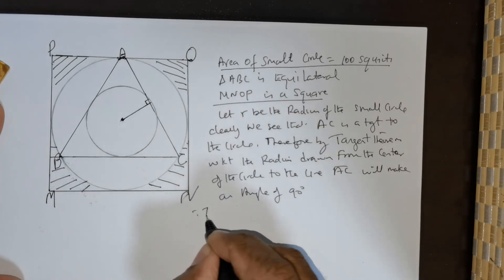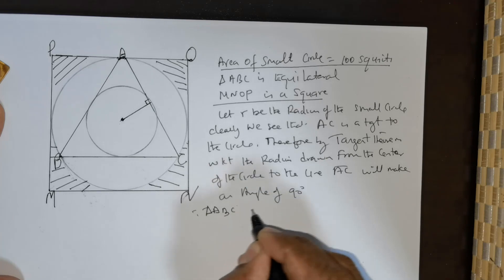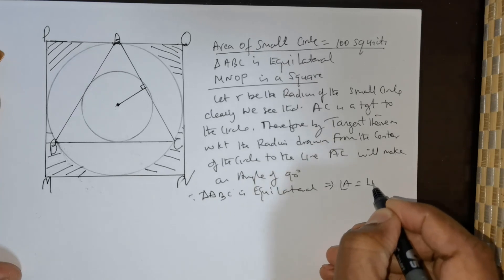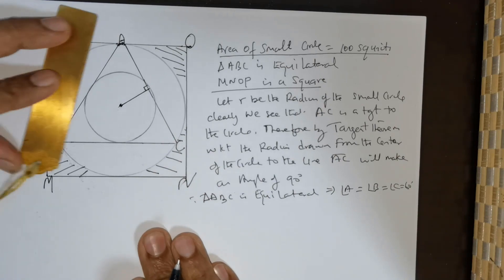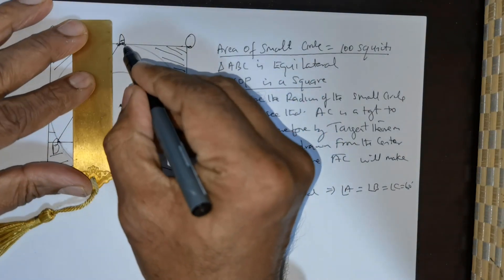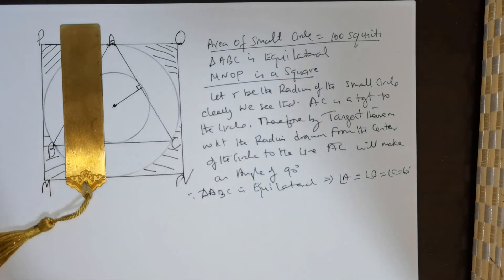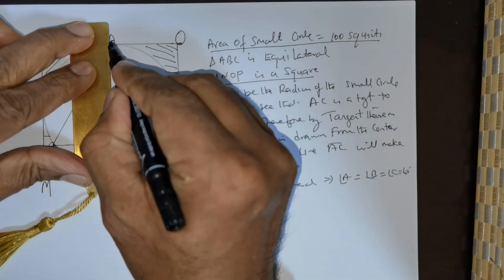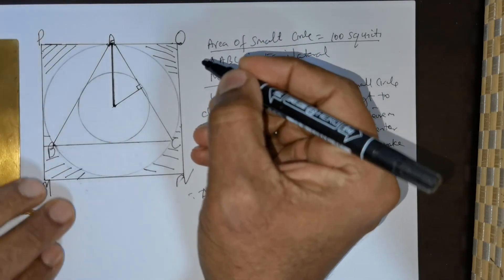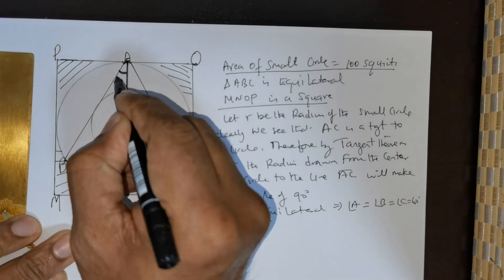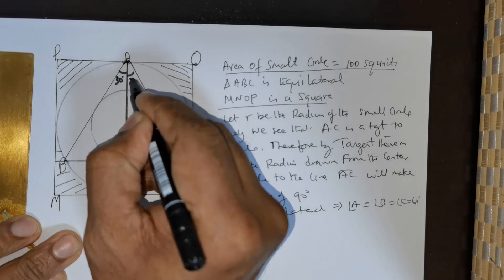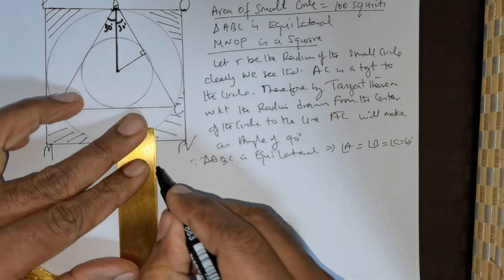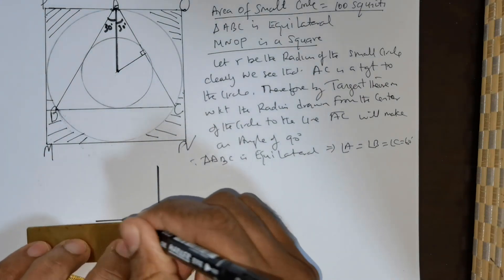Since triangle ABC is equilateral, angle A equals angle B equals angle C equals 60 degrees. From A, I'm going to drop an angle bisector. That bisector divides the 60-degree angle into 30 degrees and 30 degrees. We now have a right triangle with 90 degrees and 30 degrees. Let me draw this right triangle for your observation.